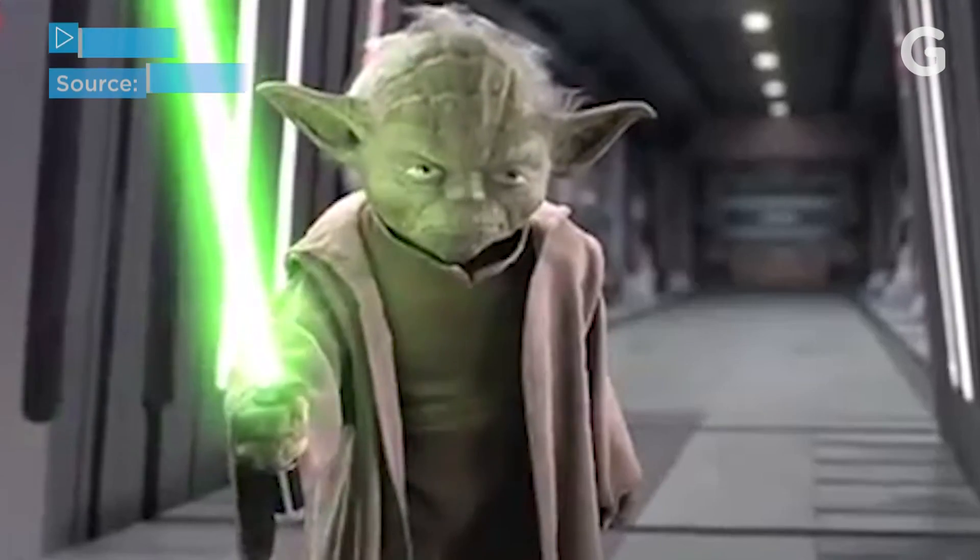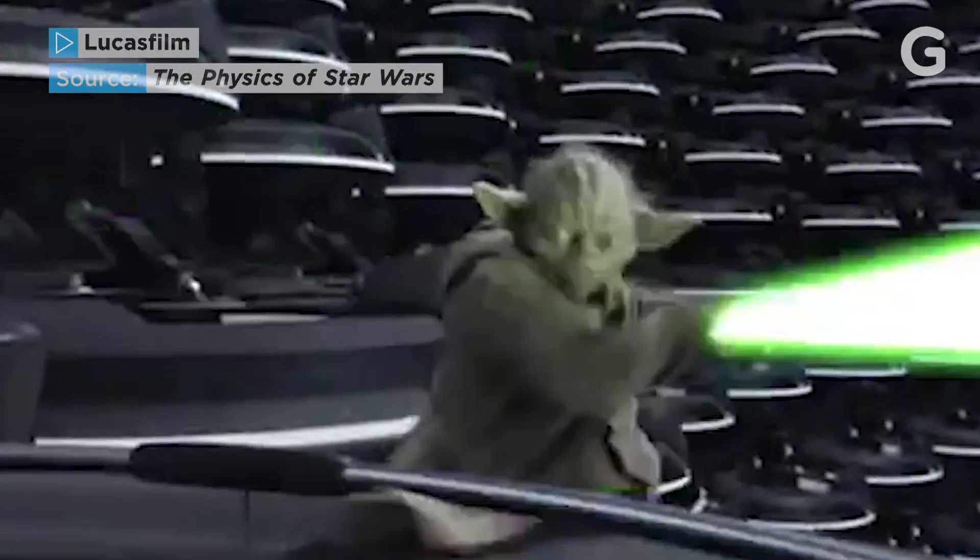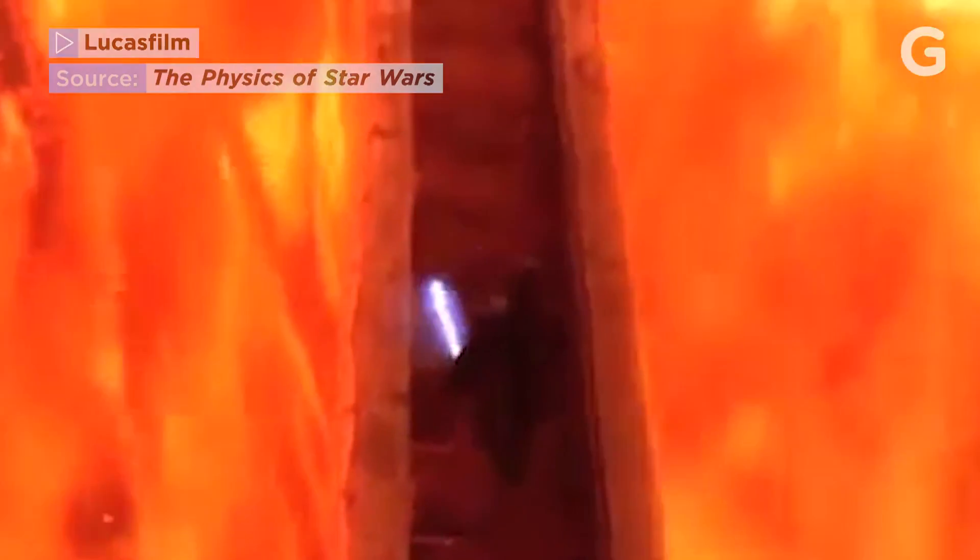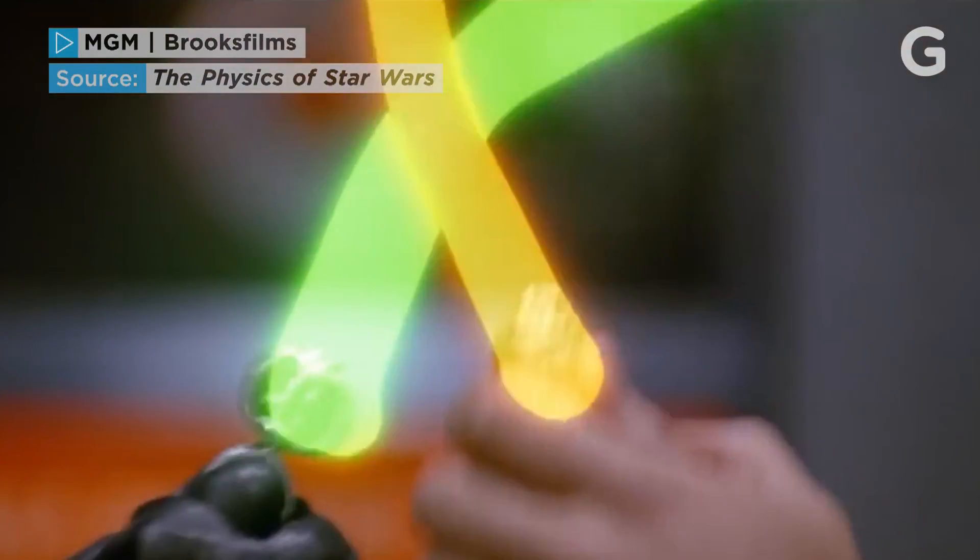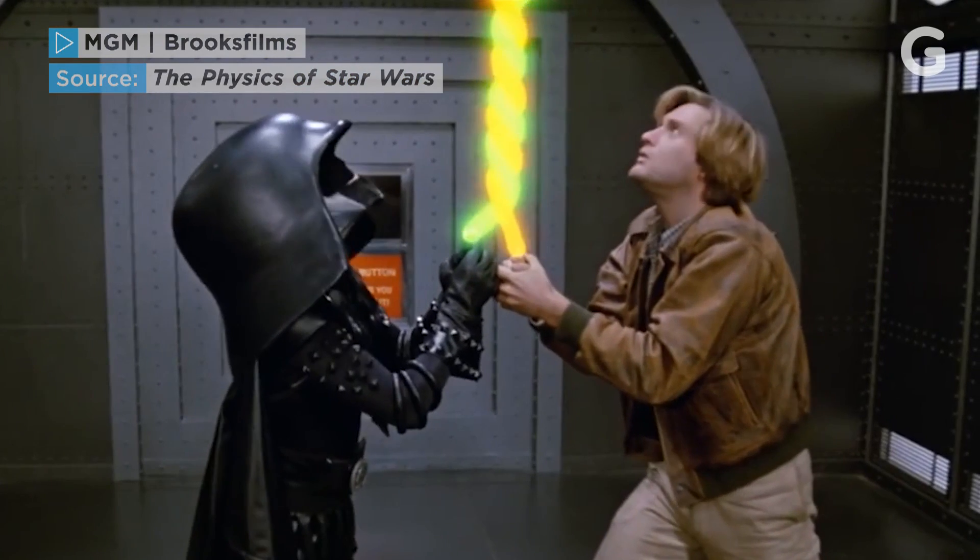Plasma could theoretically be contained in the shape of a lightsaber with a well-designed electromagnetic field, but since plasma is made of charged particles, it's attracted to other plasma. So dueling lightsabers wouldn't clash with each other—they'd combine.